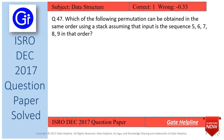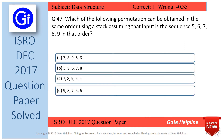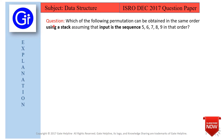Question number 47 is: which of the following permutations can be obtained in the same order using a stack, assuming that the input is the sequence 5, 6, 7, 8, 9 in that order? The options are A, B, C, and D. We need to find which permutation of this input sequence can be retrieved using a stack.